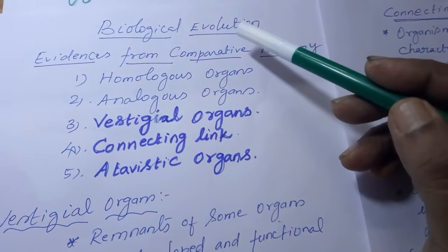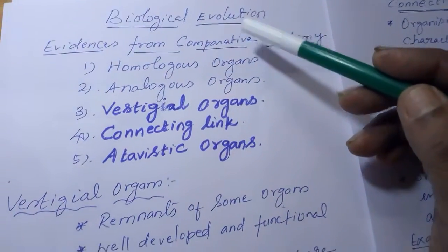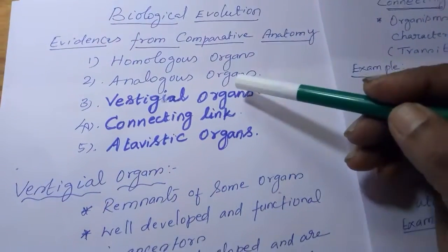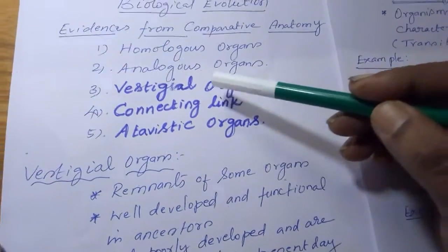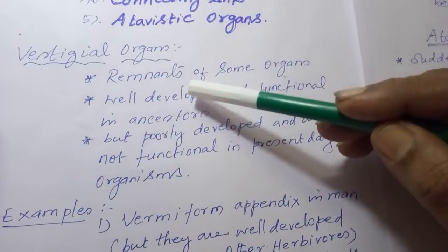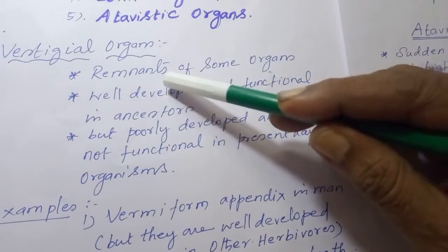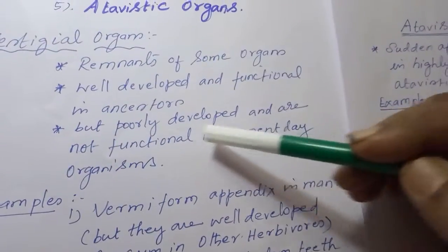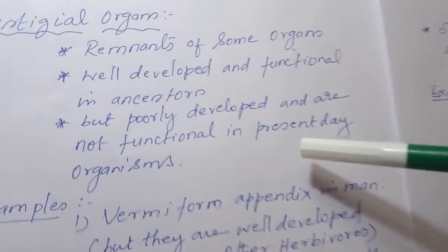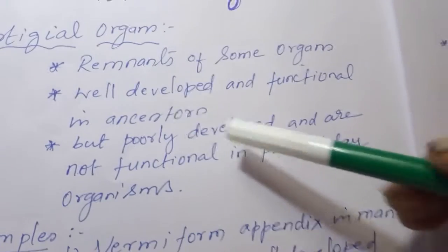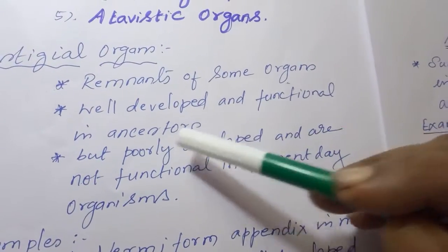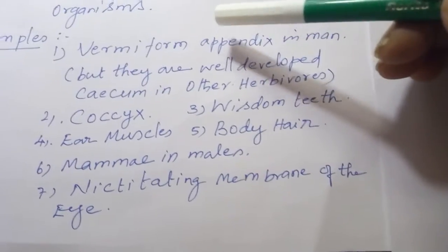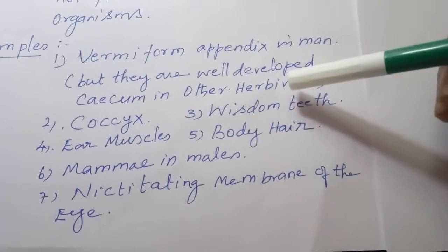To support biological evolution, we study the comparative anatomy of various organisms. Vestigial organs are remnants of some organs — poorly developed and not functional in the present-day organism, such as the human being — but were well developed and functional in our ancestors. Human beings have many vestigial organs: the coccyx (tailbone), wisdom teeth, ear muscles, body hair, and mammary glands in males.